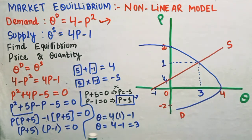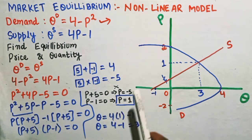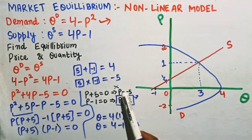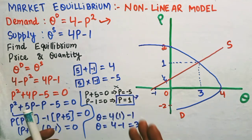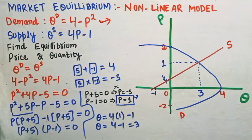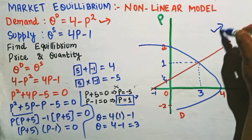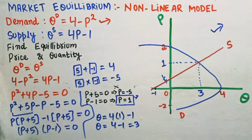That is how we solve a nonlinear model. We obtained a quadratic equation yielding two values for price, and we rejected the negative value since it has no economic sense. We remain confined to the first quadrant. I hope that is clear — thank you.